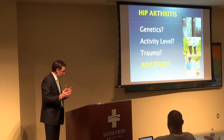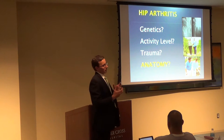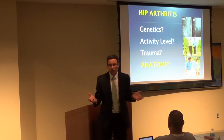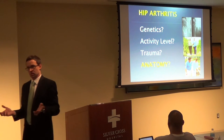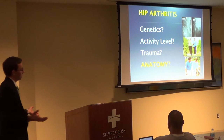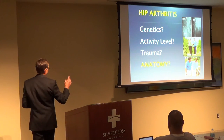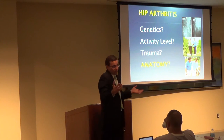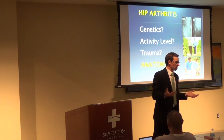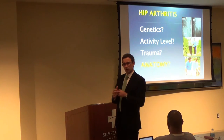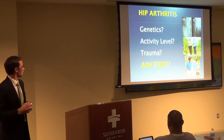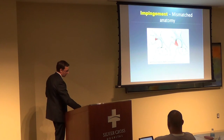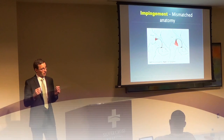We talked about some of the potential causes. One of the most important is genetics — your parents gave you a certain quality of cartilage, and that's what you're stuck with. That's an important factor, but it's one we can't really deal with. Activity level is also important: if you sit on the couch your whole life you might not get arthritis, but if you're an active person you're wearing out that cartilage a little bit and might wear it out earlier than others. Trauma can certainly lead to cartilage damage, and then there's anatomy, which we've already alluded to.